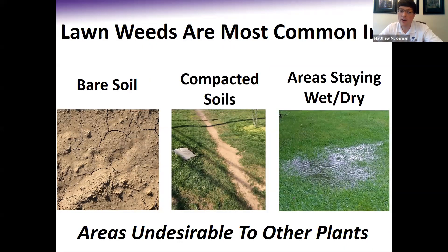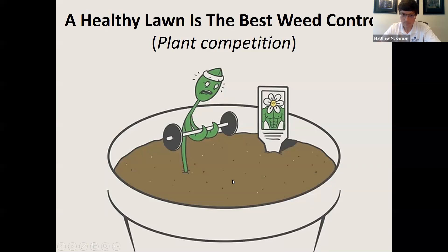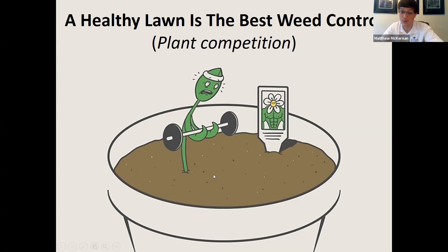Weeds are most common in areas where we have bare soil, compacted soils, or areas that stay really wet or really dry — perhaps low spots in our lawns. These places are undesirable to many other plants and especially hard for some grasses to grow, so these are often areas where weeds pop up most. Ultimately, the best solution for weed control is to have a healthy lawn — the healthier your lawn is, the more actively it's growing, the better plant competition you have. A healthy lawn is going to be the best way to reduce and prevent weeds because it will out-compete those weeds and stop them from growing in the first place.